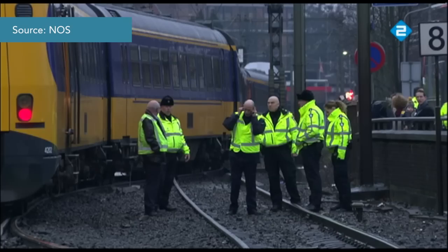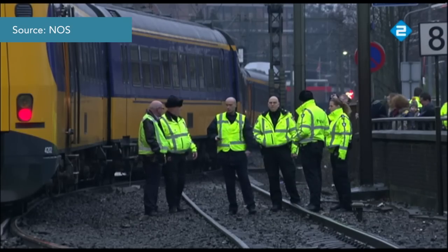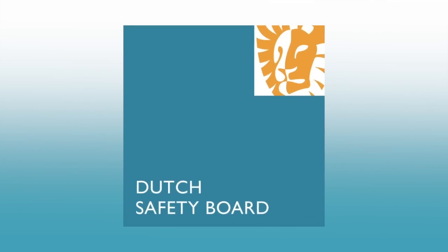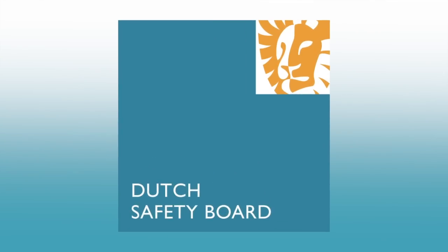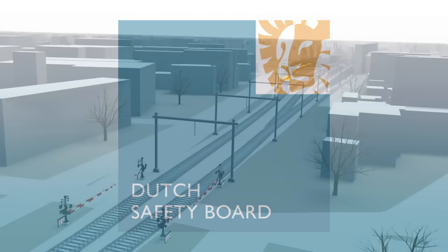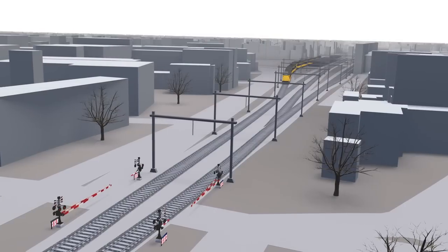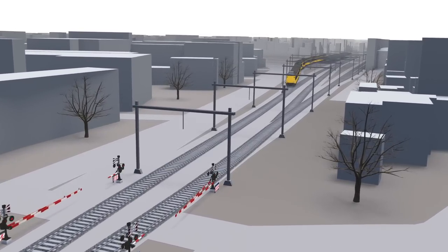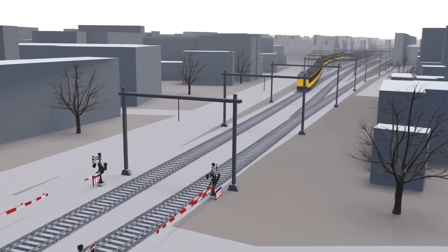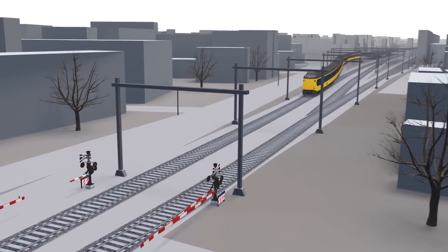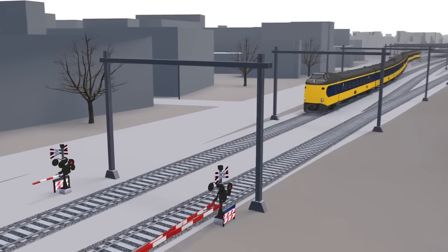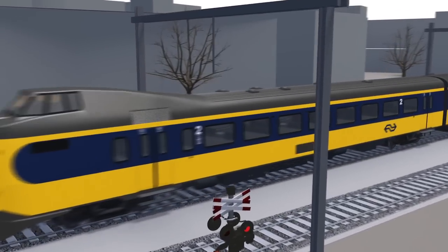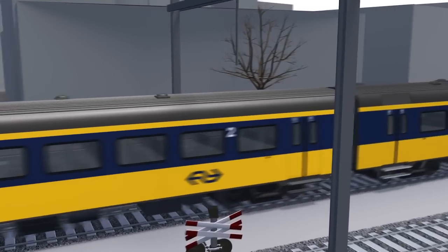How can a defect switch lead to a serious incident like this? The Dutch Safety Board conducted an investigation into the accident. The train carried around 550 passengers and was travelling from Enskede to Schiphol Airport. After a short stop in Hilversum, it passed switch 3B, just after the railway level crossing.